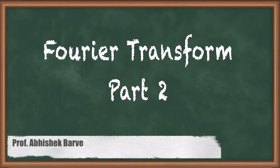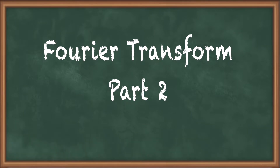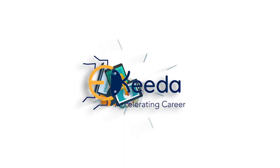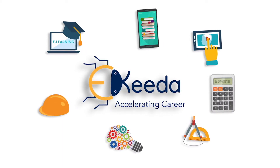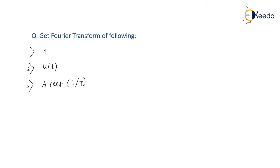Hello friends. In this video we will solve some numericals based on Fourier transform. The question is displayed on the screen. We have to get the Fourier transform for the following: first, Fourier transform for 1; second, Fourier transform for u(t); and third, Fourier transform for A·rect(t/T). Let us see how to deal with this.